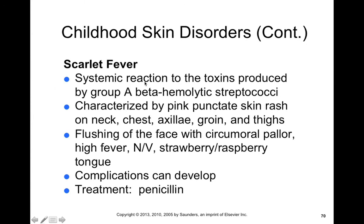Scarlet fever is a systemic reaction to toxins produced by group A beta-hemolytic streptococci. We talked about this previously with rheumatic joint diseases and rheumatic fever with the heart. It's characterized by a pink punctate skin rash on the neck, chest, axillary, groin, and thighs. You get flushing of the face and circumoral pallor, as well as nausea, vomiting, strawberry tongue, and raspberry tongue. Complications can develop, including joint disorders and valvular disorders. It's treated with penicillin.